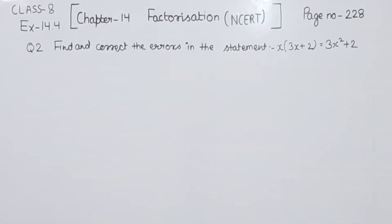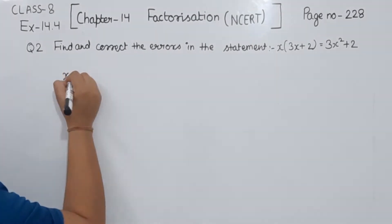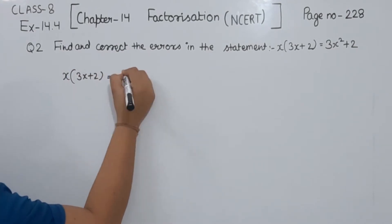Find and correct the errors in the statement. So the statement we have is x multiplied by 3x plus 2 equals 3x squared plus 2.